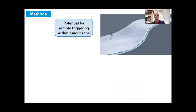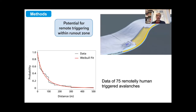Terrain below steep slopes also has to be considered in association with the possibility of remote triggering. To understand where avalanches typically get triggered remotely, we analyzed a dataset of 75 remotely human-triggered avalanches. Most avalanches get triggered quite close to the release areas, and the further away, the lower the frequency. Most remote-triggered avalanches occur within zero to one hundred meters of the release area.